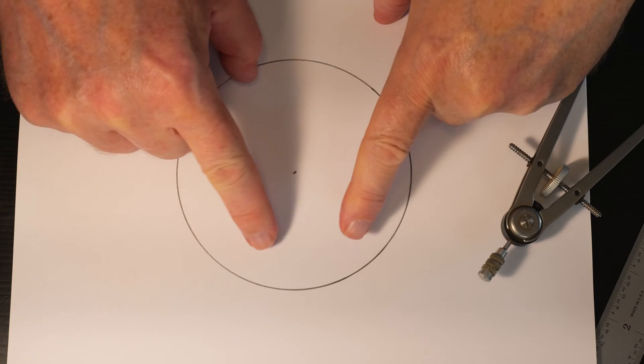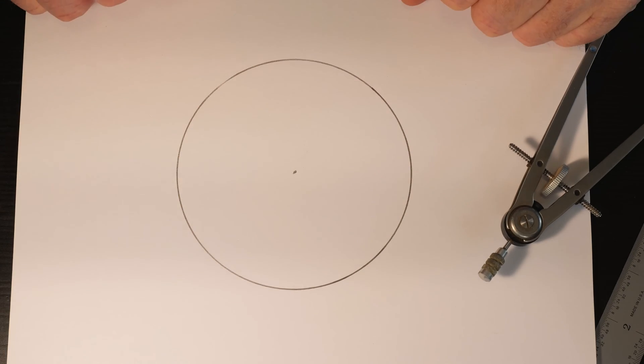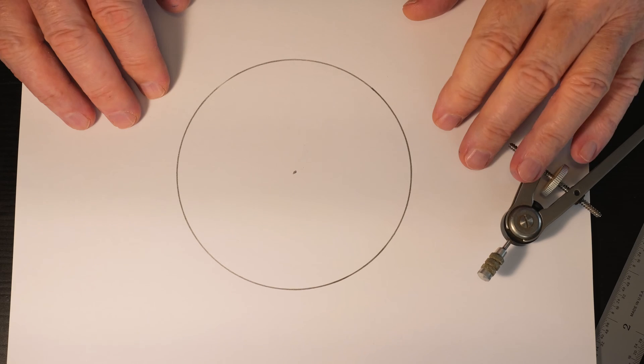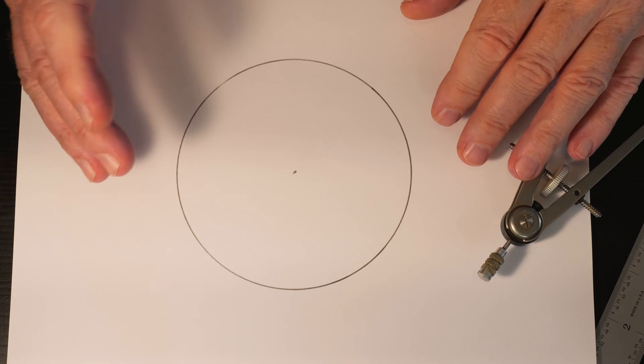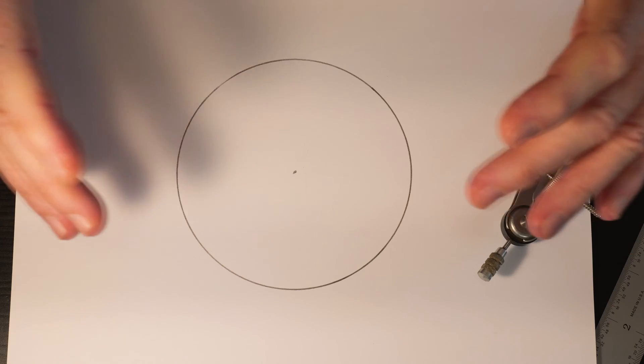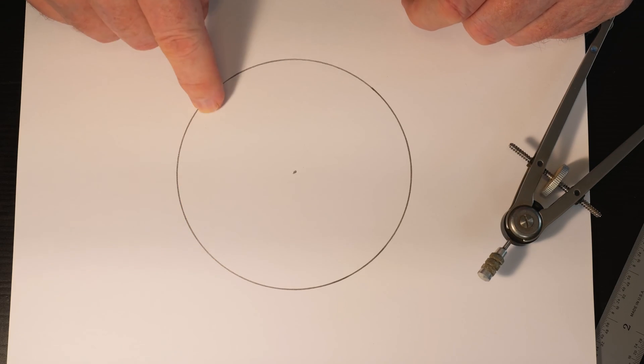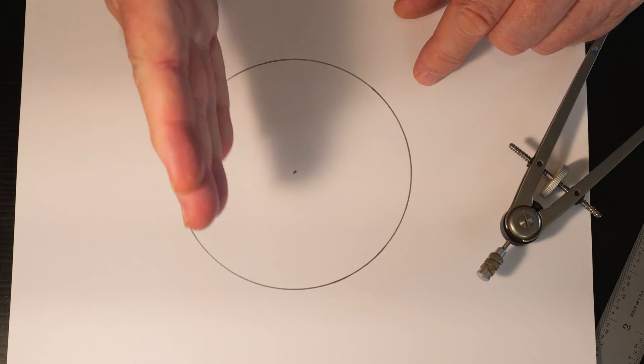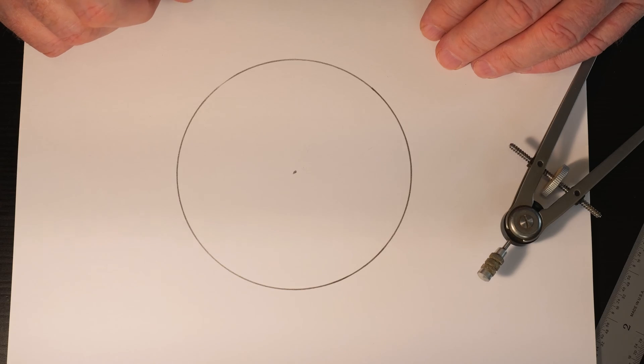Here's a way you can inscribe a square inside this circle. One application might be, for example, a large round tabletop where you want to create a drop leaf on all four sides. You would want to inscribe a square inside that circle so you'd know where to make the cuts to create the leaves of the table.